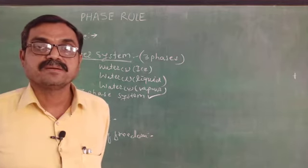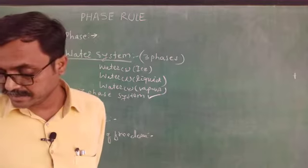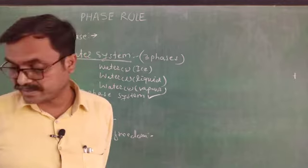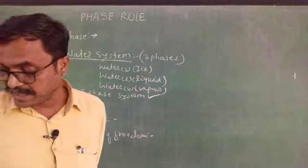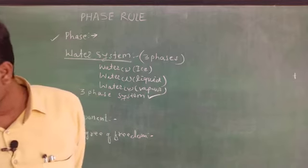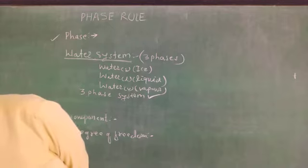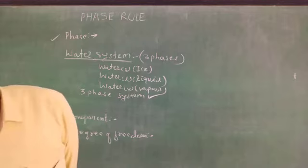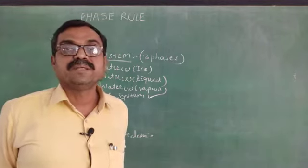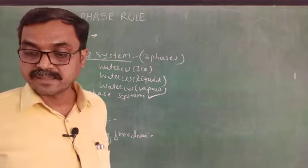Let us see the definition of component once again. Component is defined as the smallest number of variables in terms of composition of each phase that can be expressed at equilibrium, and that is known as component. Now let us see examples of component.